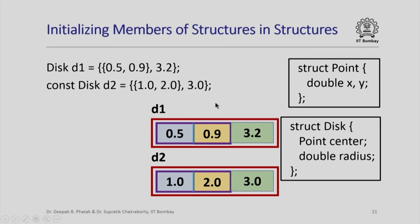Similarly, here is another initialization where I declare d2 as a constant object of type disk and initialize the various members of the structure d2, as well as structures inside d2, in the same way. Note that because d2 is declared as a constant, I cannot assign values to any of its members within the program. This is just like any other constant declarations we have seen earlier.